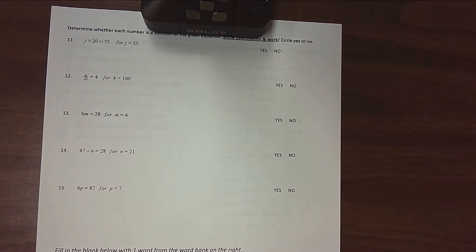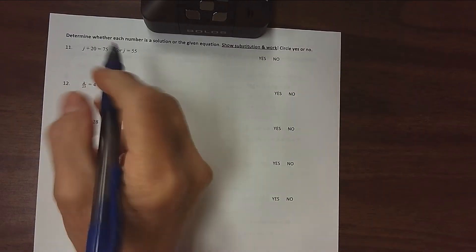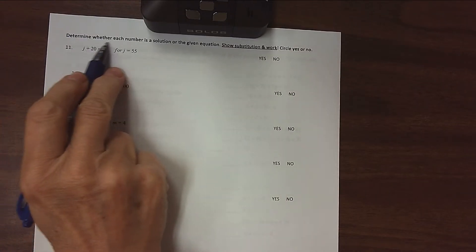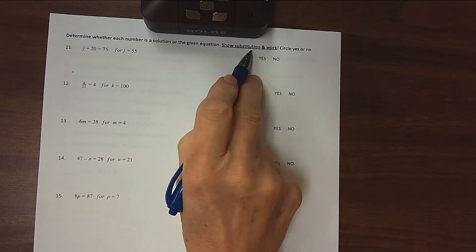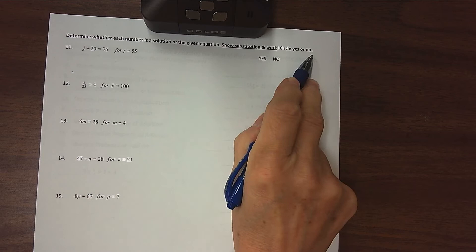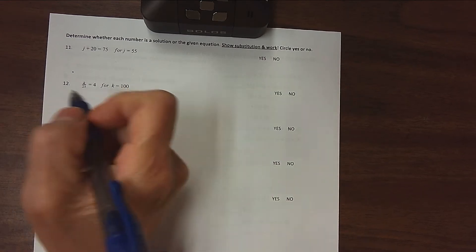Here's page 3 of our unit 1, part 3 study guide. The directions say determine whether each number is a solution of the given equation. Show your substitution and your work, then circle yes or no. If you just circle yes or no, you will not get credit. You have to show your work.